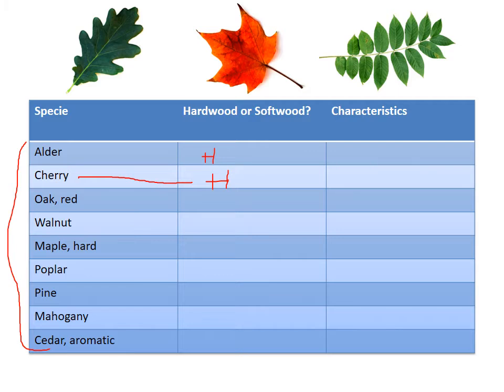Red oak, as opposed to white oak — though they're very similar in grain structure — is also a hardwood. It's kind of a reddish pink, not as red as cherry. Cherry gets much, much darker than oak. Oak is very popular though, and has a very coarse grain, whereas cherry is kind of smooth.